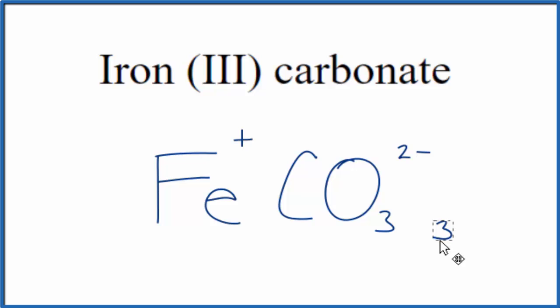So we'll move the 3 here, down here, move the 2 over here. Let's get rid of these symbols. And we need to put parentheses around the carbonate ion here. And that gives us this formula of Fe2(CO3)3 for iron (III) carbonate.